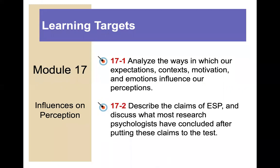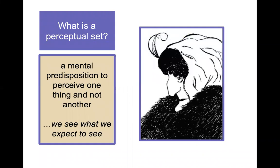One of the first things we're going to talk about is the concept of perceptual set. What is perceptual set? It's a mental predisposition to perceive one thing and not another — this idea that we sort of see what we expect to see. To see is to believe, but as we less fully appreciate, to believe is to see. Through experience, we come to expect certain results, and those expectations give us a perceptual set — a set of mental tendencies and assumptions that affects top-down processing.